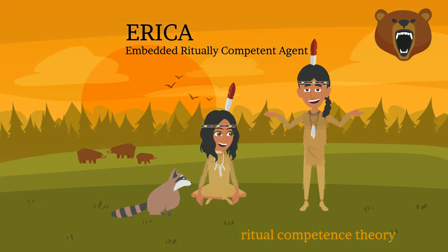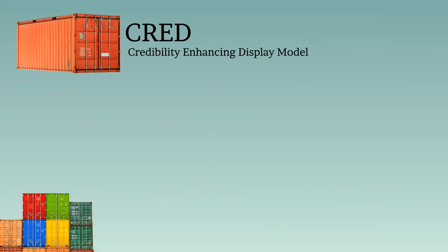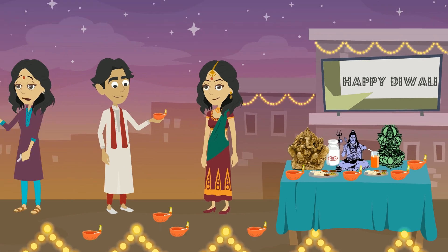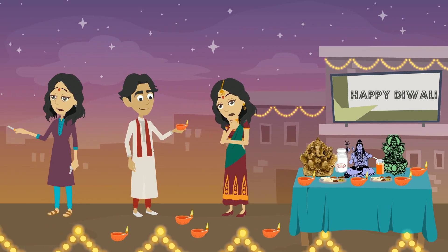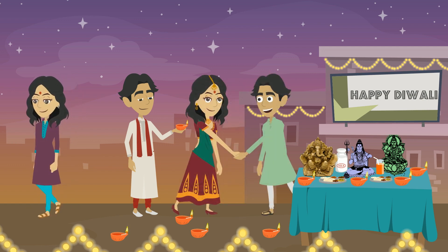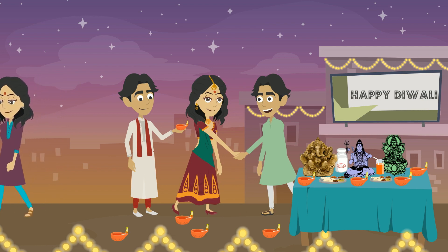We call the next model CRED, the Credibility Enhancing Display Model. This shows how particular behaviors in a social group enhance a person's credibility in the eyes of other group members, while other actions might decrease that credibility or social status. In this model, a person's credibility is tied to their participation in the group's collective beliefs and actions. CRED also models how religious groups change as individual members signal their commitment to the in-group.